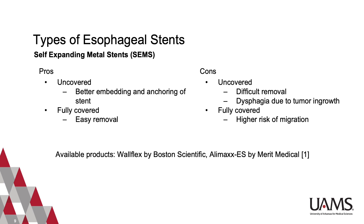These stents most commonly come in two different types, namely uncovered and fully covered. Uncovered stents facilitate better embedding and anchoring of the stent, but can be difficult to remove and have a high risk of dysphagia symptoms due to tumor ingrowth. The fully covered stents allow for easy removal, but have a higher risk of migration. Some examples of currently available metal stents include the WallFlex by Boston Scientific and Allomax ES by Merit Medical.